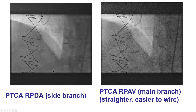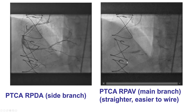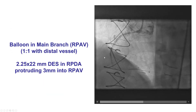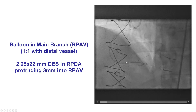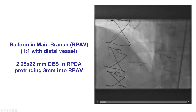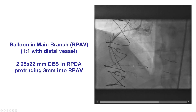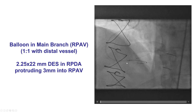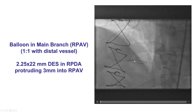We wired both vessels, then pre-dilated both vessels, and were ready to start with stenting. We had to decide which would be the main vessel and which would be the side branch. Because of the difficulties we had wiring the PDA, we decided to stent the PDA first, which would straighten the vessel and make subsequent rewiring attempts easier. We placed a 2.25 by 22 mm drug-eluting stent in the PDA, slightly protruding back into the distal right coronary artery.